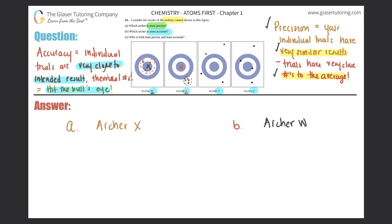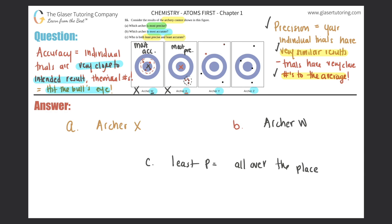Last but not least, part C says: who is both least precise and least accurate? Basically, who has never picked up an archery bow before? So it's not going to be W, since he was the most accurate, and not X, since he was the most precise. We're down to Y and Z. We're looking for someone who is least precise — basically all over the place with no similar results.